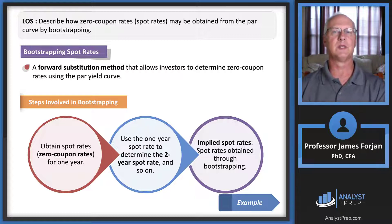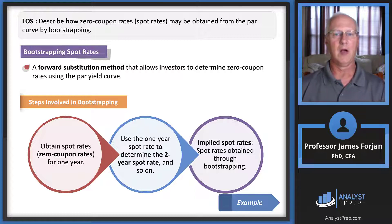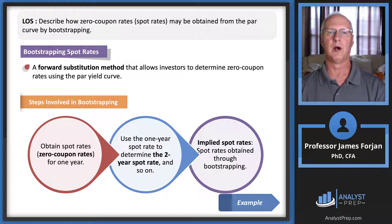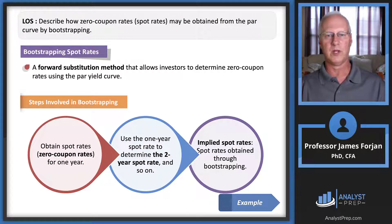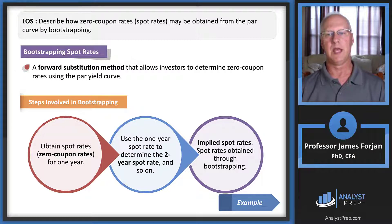Bootstrapping is a forward substitution method used to determine zero coupon rates from the par yield curve. Par yields are the yields that would force the bond to sell at par value. The steps are: obtain the one-year spot rate, then use it to determine the two-year spot rate, and continue sequentially to obtain each implied spot rate.